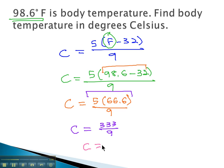And then, when we divide 333 by 9, we get body temperature in degrees Celsius, which is 37 degrees.